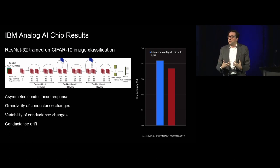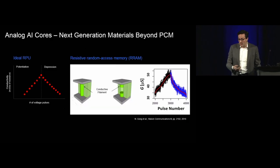There's a lot of details underneath of what you actually have to do to make this work, including dealing with the asymmetric conductance response across the devices, the granularity you can achieve in terms of the conductance changes, the variability that is present from device to device, and also conductance drift. All of these things are behind the scenes.